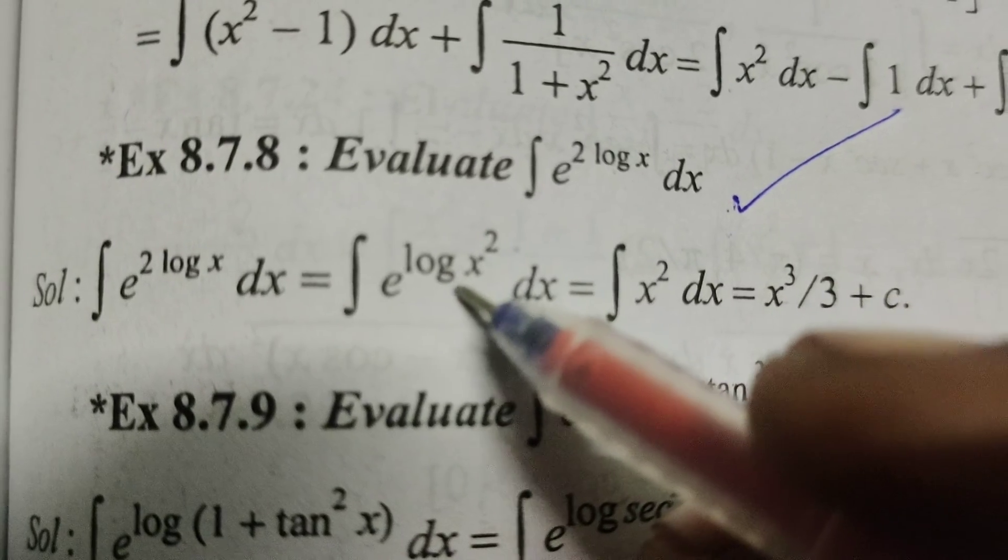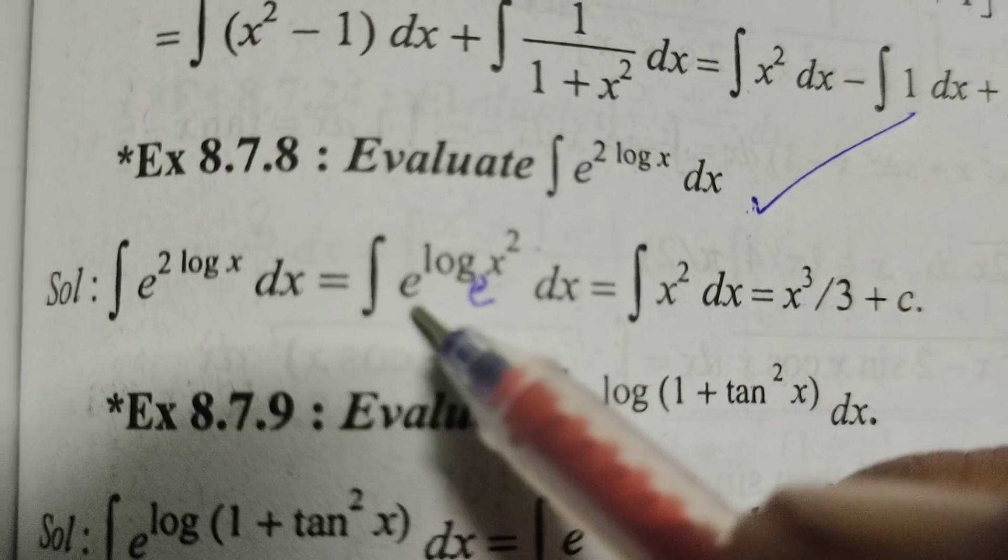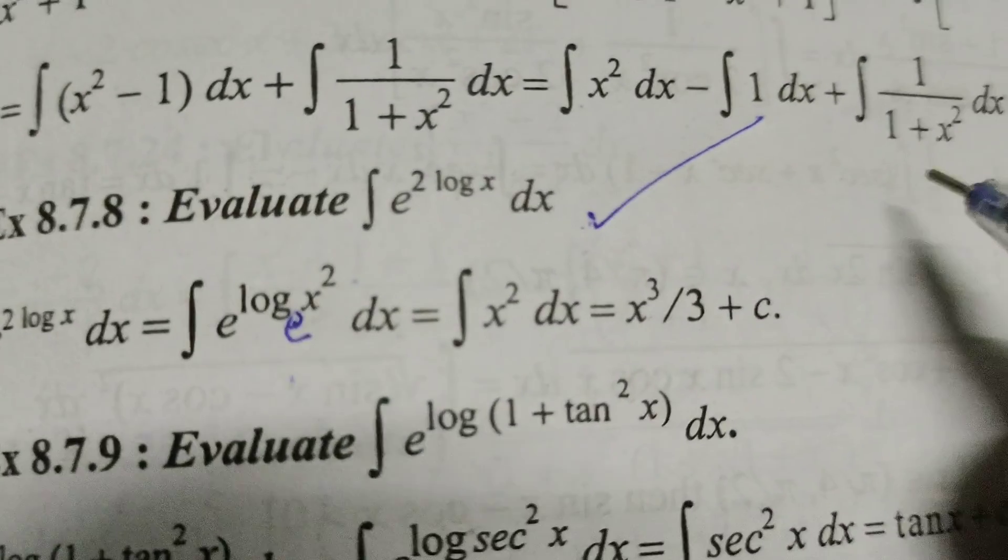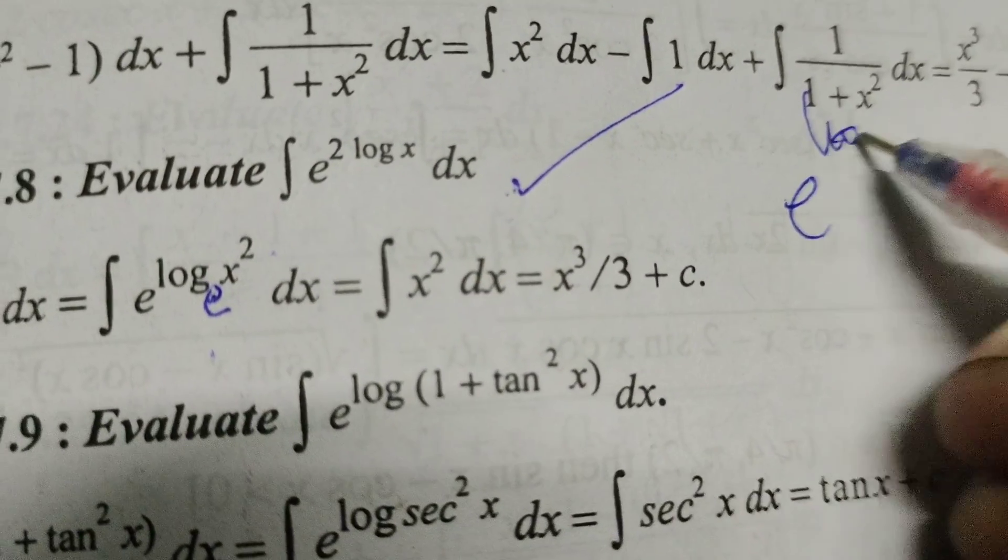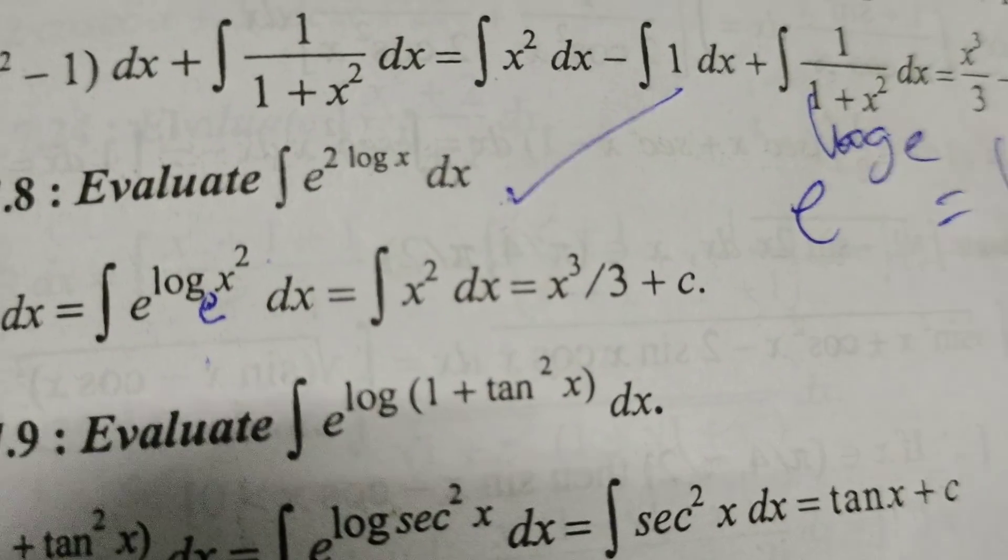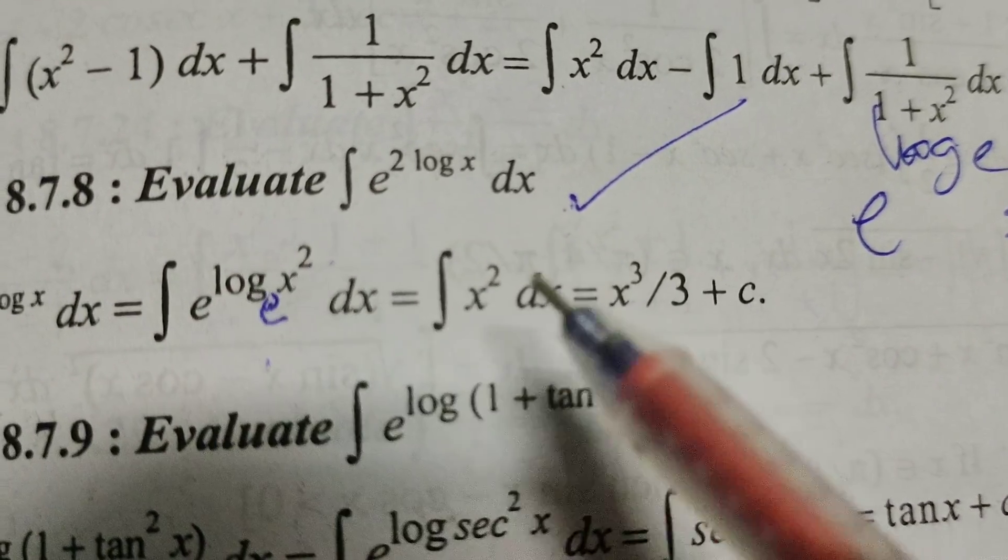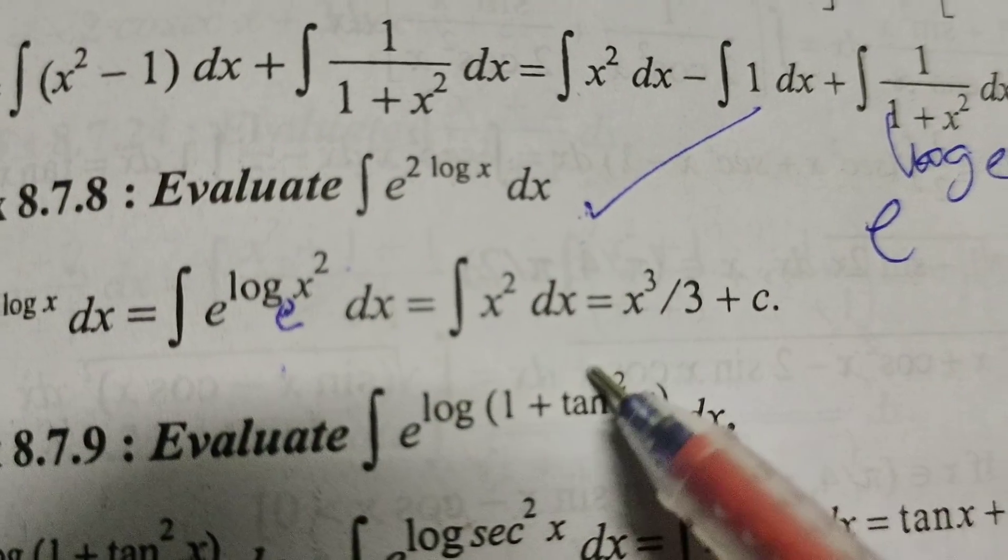Here base e is there. E power log base e, e power log base e means 1. So this is 1. Now, only your integral of x square dx is there.